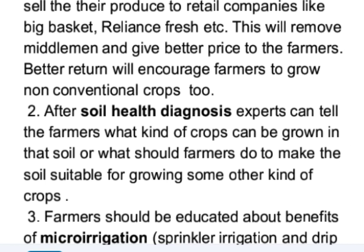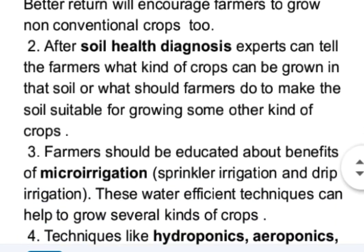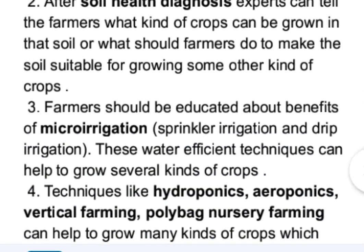After soil health diagnosis, experts can tell farmers what kind of crops can be grown in that soil, or what steps to take to make the soil suitable for other crops. Farmers should also be educated about the benefits of micro-irrigation like sprinkler irrigation and drip irrigation, as these water-efficient techniques can help grow several kinds of crops.